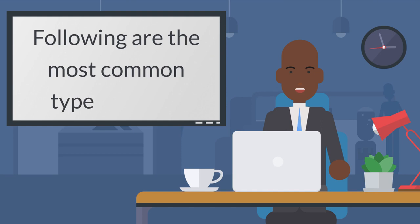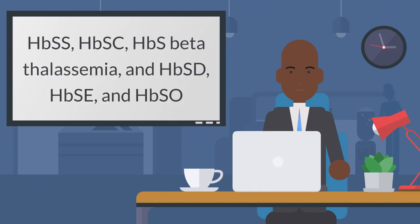The most common types of sickle cell disease (SCD) are HbSS, HbSC, HbS beta thalassemia, and HbSD, HbSE, and HbSO.